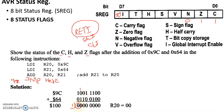We will have more considerations on the V flag towards the end of this module. In this case, there is a carry from bit 6 to bit 7 as well as from bit 7 out, so the V Status Flag will be set.